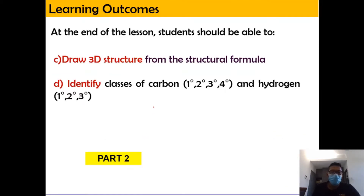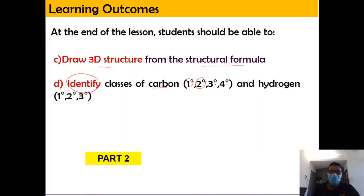In this video, we're going to learn how to draw the 3D structure from the structural formula. We're also going to learn how to identify the classes of carbon, which are primary, secondary, tertiary, and quaternary.